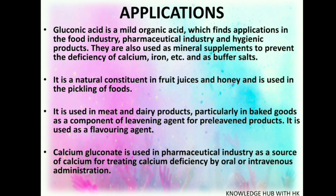Applications of gluconic acid: gluconic acid is a mild organic acid which finds application in the food industry, pharmaceutical industry, and hygienic products. It is also used as a mineral supplement to prevent the deficiency of calcium, iron, etc., and used as a buffer salt. It is a natural constituent in fruit juice and honey, and is used in the pickling of fruits. It is used in meat and dairy products, particularly in baked goods, as a component of leavening agent. For pre-leavened products, it is used as a flavoring agent. Calcium gluconate is used in the pharmaceutical industry as a source of calcium for treating calcium deficiency by oral or intravenous administration.